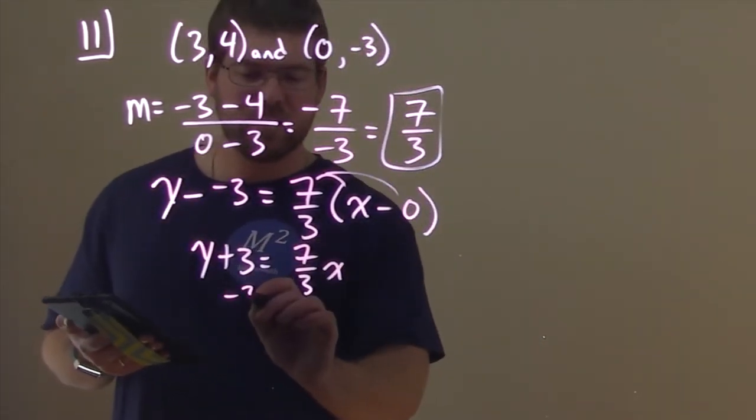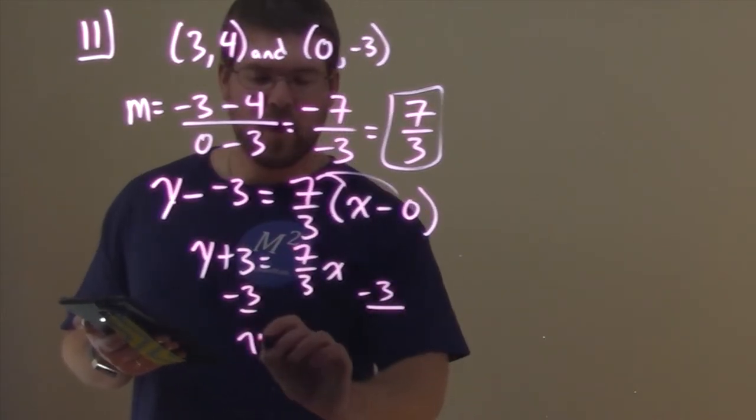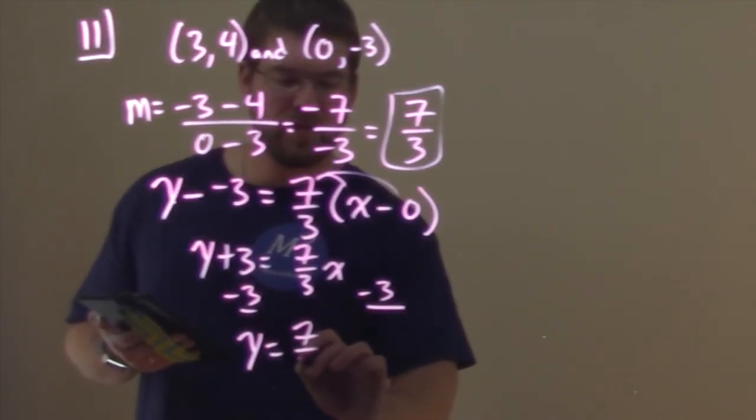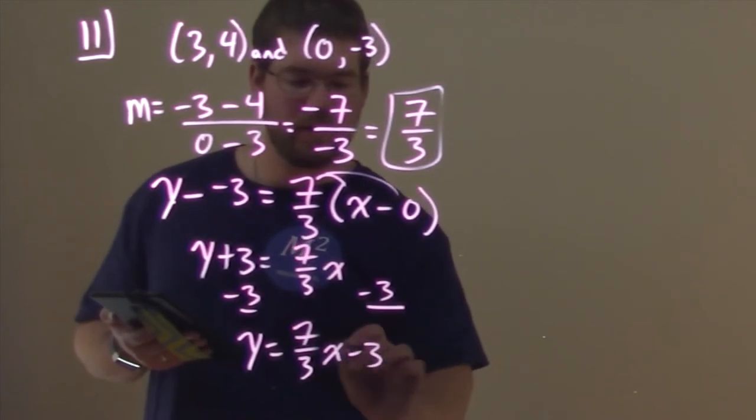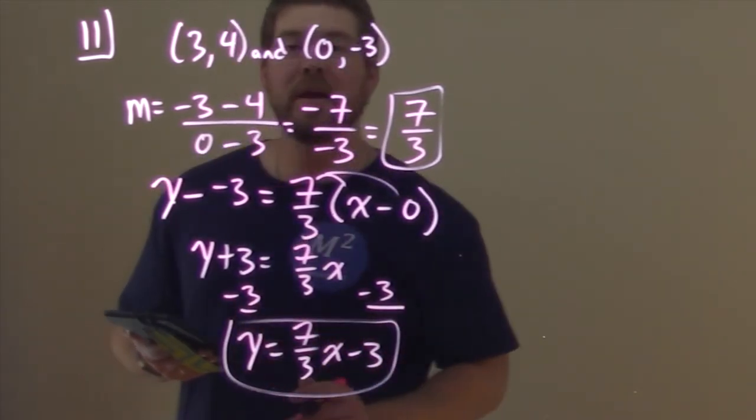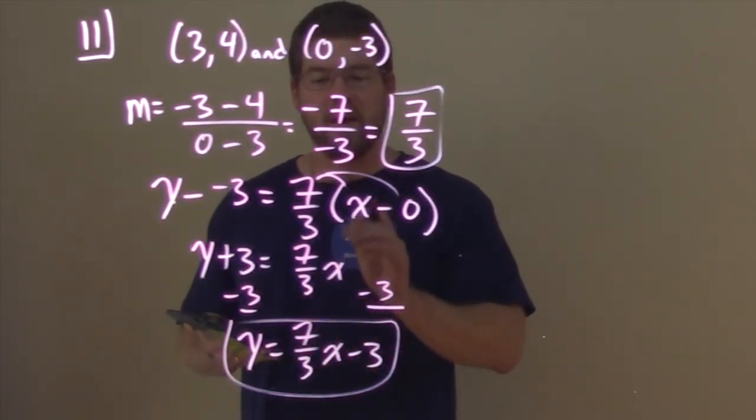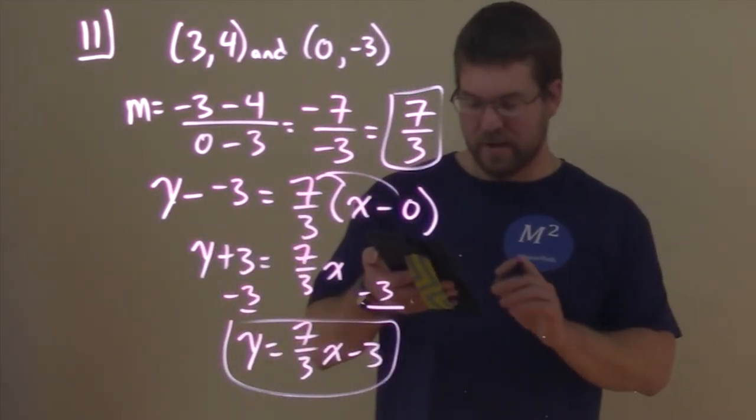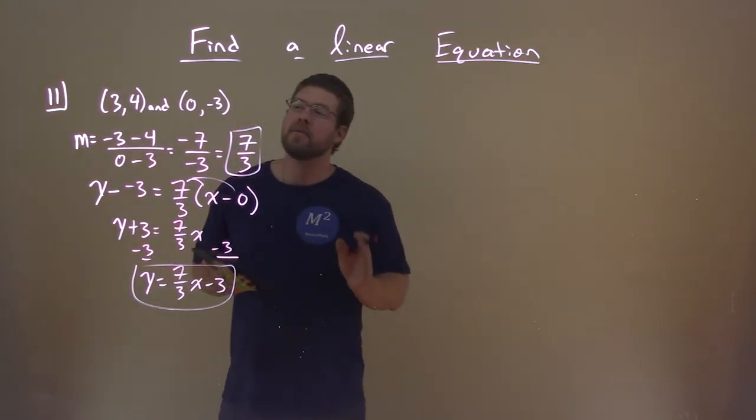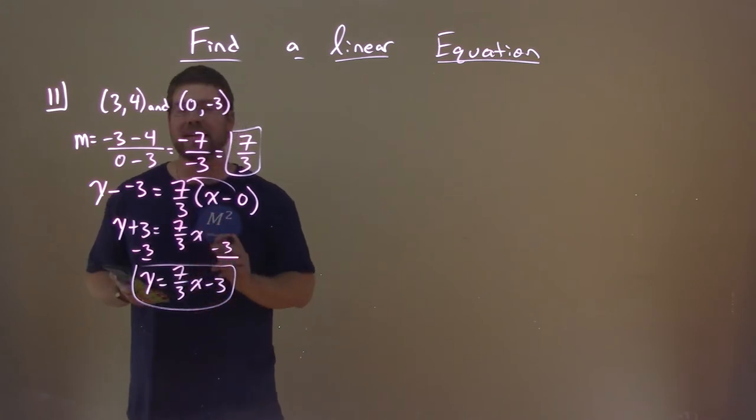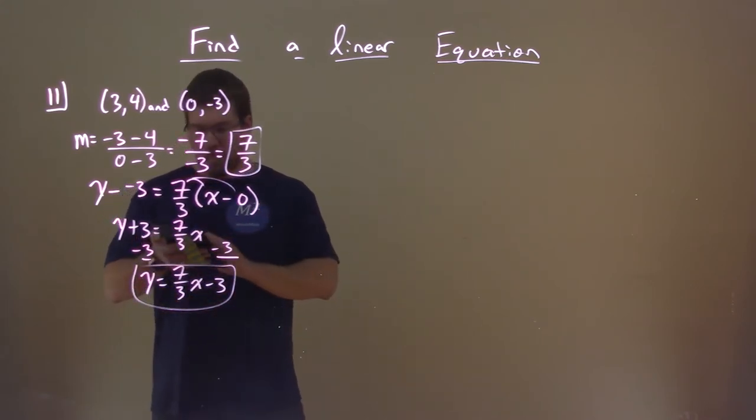So lastly, we just need to subtract the 3 to both sides. And we have Y by itself already, 7 thirds X minus 3. And there we have our equation in slope-intercept form, Y equals 7 thirds X minus 3. And if you had done this with this first point, you would have got the same exact answer. So that's pretty cool. You can choose whatever point you want.